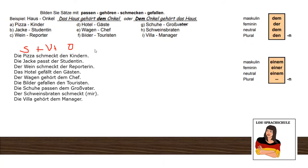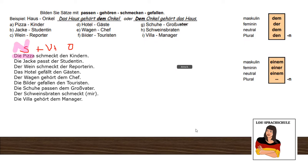Let's compare. I gave you the pattern: subject, verb, object. Both word orders are correct. First one: die Pizza schmeckt den Kindern — the pizza is nominative as subject, then the verb, then Kinder in plural, so we put den and add the n. Next: die Jacke passt der Studentin — die Jacke is nominative; Studentin is female, so we check the chart and it is der.